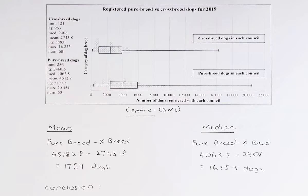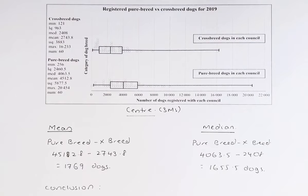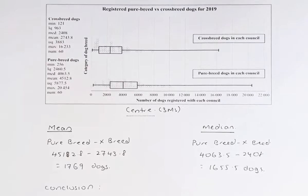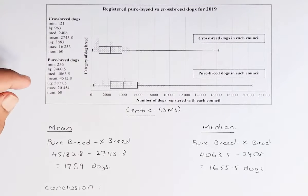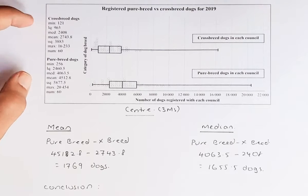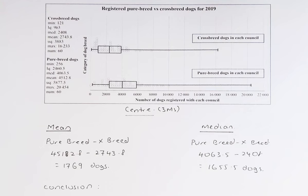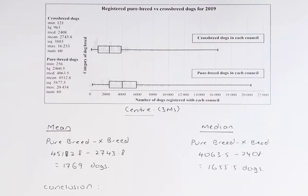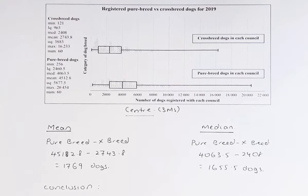So between the mean and median, the median is more useful at Level 1, but we are going to calculate both. The numbers for the mean, median, and all other statistics are on the left-hand side of the graph. The mean for purebred is 4,512.8 while the mean for crossbreed is 2,743.8, so the purebred is bigger by 1,769 dogs.